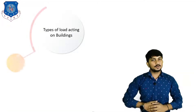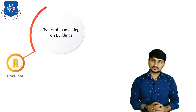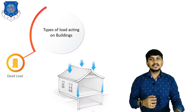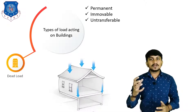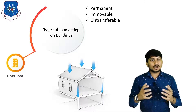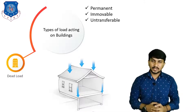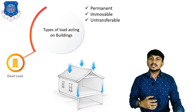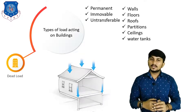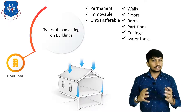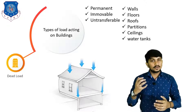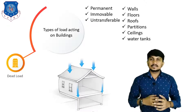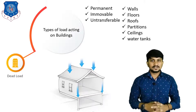Let's start with the first type of load, which is dead load. This is the non-transferable, unmovable, and permanent type of load. It is also called the self-weight of the building. It includes self-weight of walls, roof, beams, columns, footings, partition walls, fillings, water tanks, floors, etc.